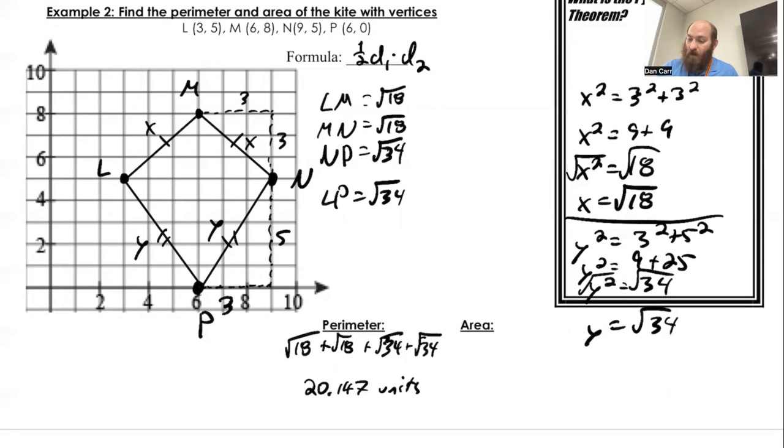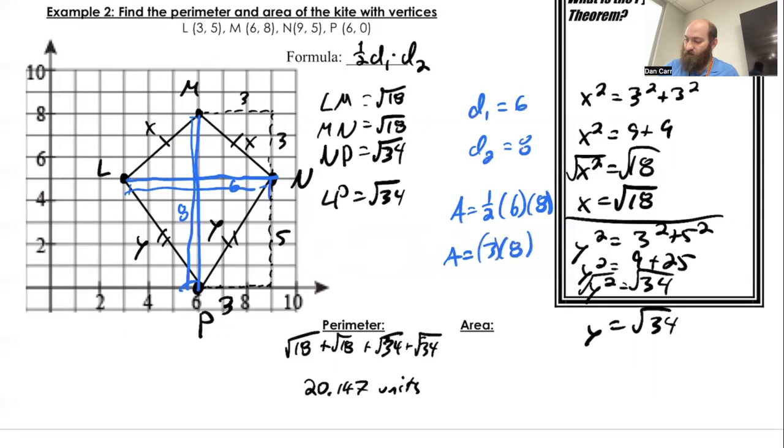For area, that's actually going to be even easier because the two diagonals are on there pretty easily. That has a length of 8. That's 1, 2, 3, 4, 5, 6. So the two diagonals are 6 and 8. So diagonal 1 is 6. Diagonal 2 is 8. So my area is one half of 6 times 8. So that's going to give me 3 times 8. So my area is going to be 24 square units.